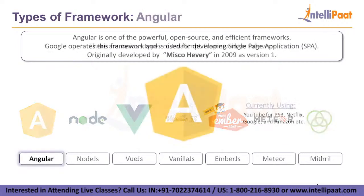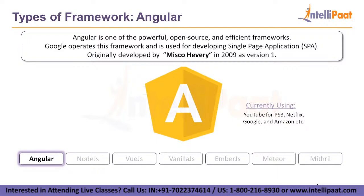Starting with the first framework, Angular. Angular is a JavaScript Framework which is written in TypeScript. It is one of the most powerful, efficient, and open-source frameworks. Google operates this framework and it is implemented for single-page applications. AngularJS was originally developed by Misko Hevery in 2009 as version 1. The currently latest version of Angular is 12, which was released on May 12, 2021.